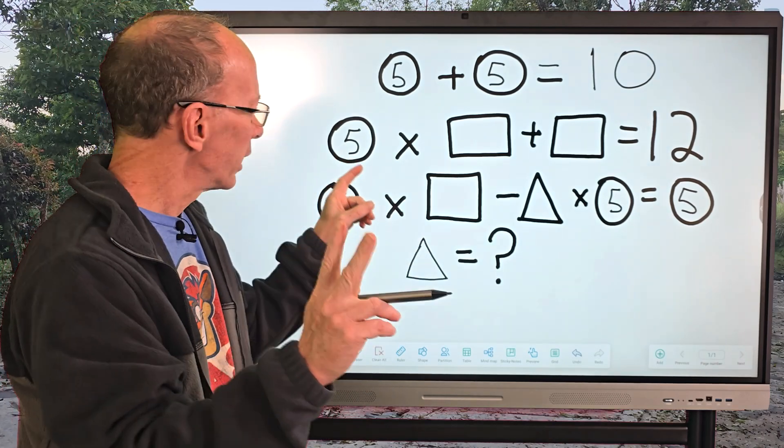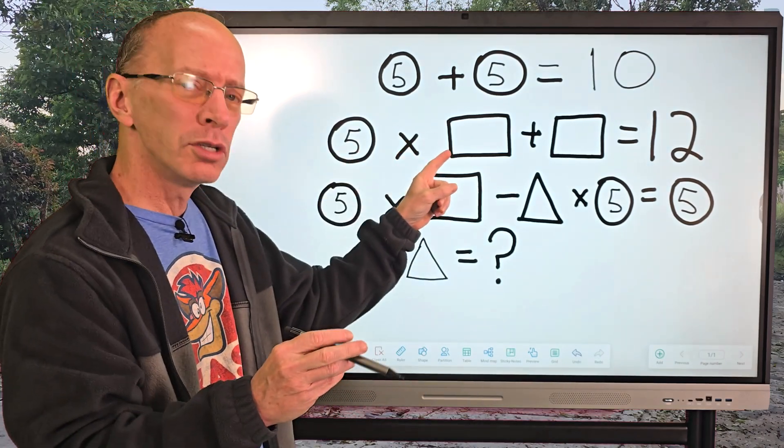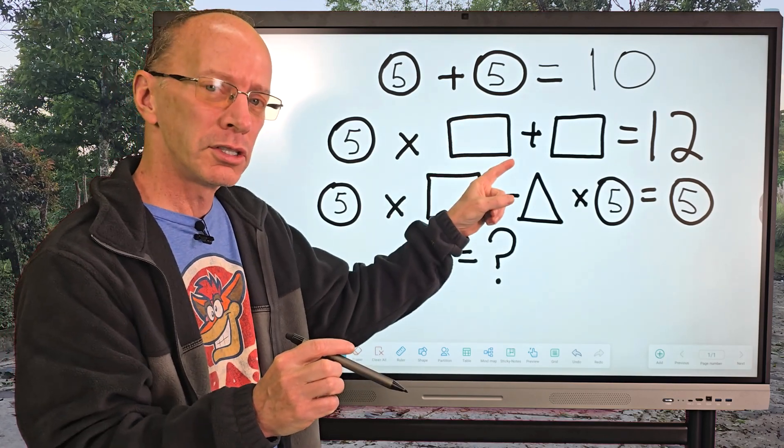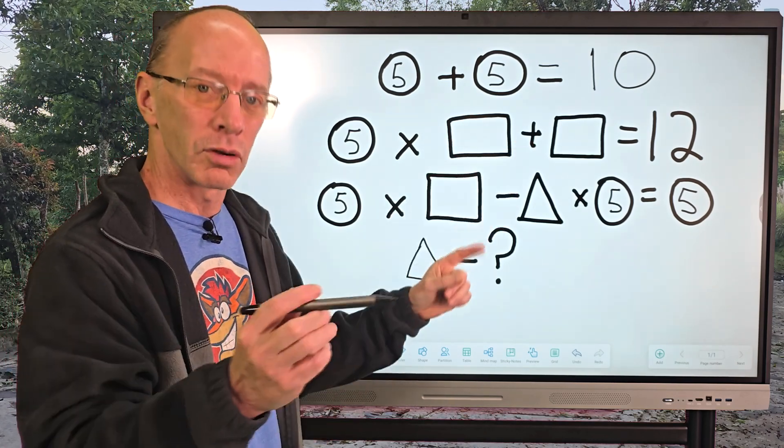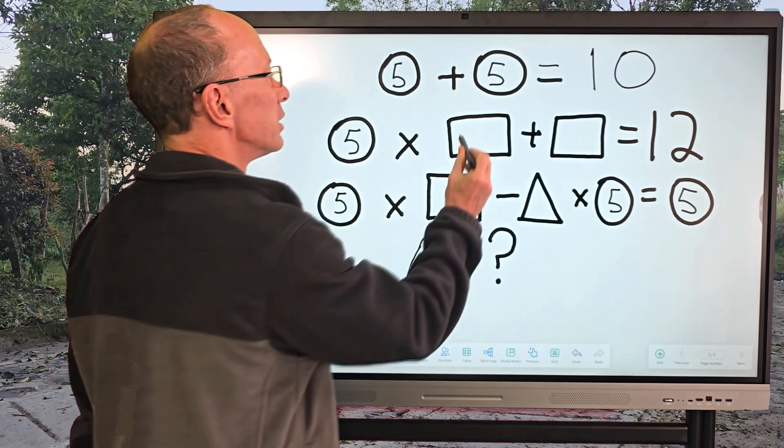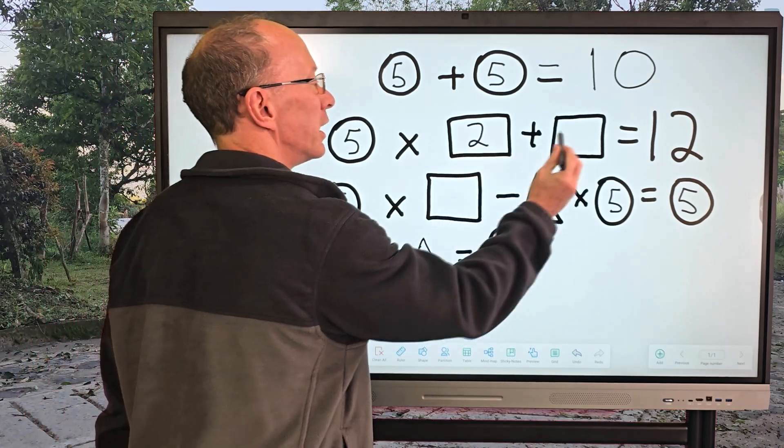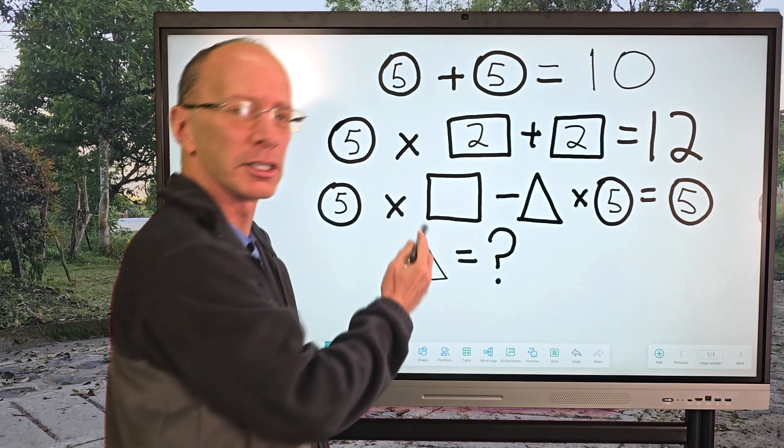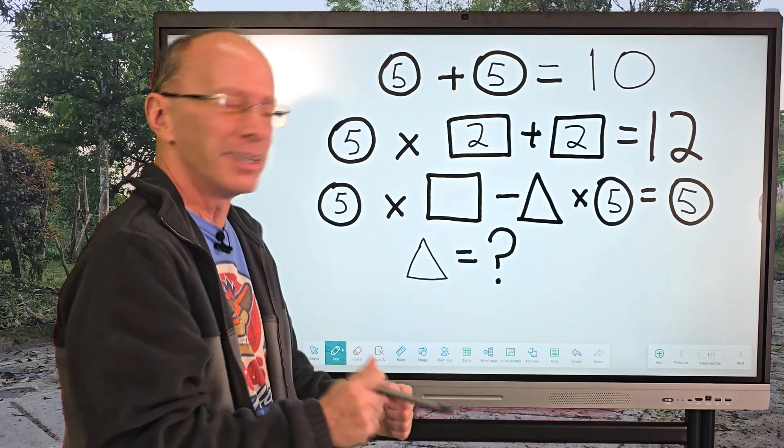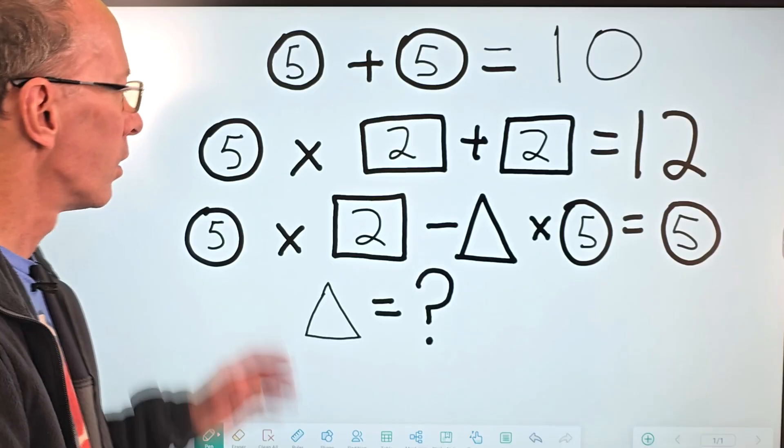Try two. Try two. Five times two would be 10 plus another two would be 12. So two. So let's go ahead and put two right here. Another two right there. We got a tootie tattoo. Remember tootie tattoo and then put a two right here.